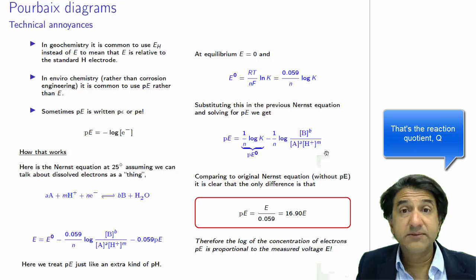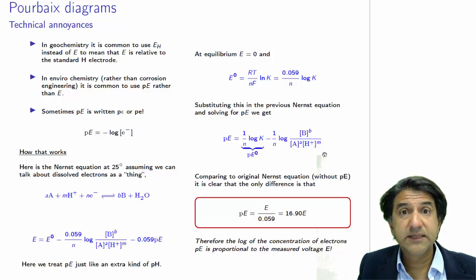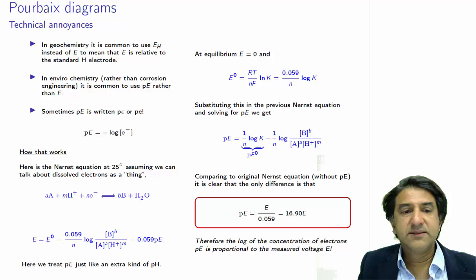If we compare this to the original Nernst equation, the one that's most normally used without electron concentrations, the one back in the previous slide, what we see is that PE is essentially just equal to E divided by 0.059, 16.9 times E, the voltage.